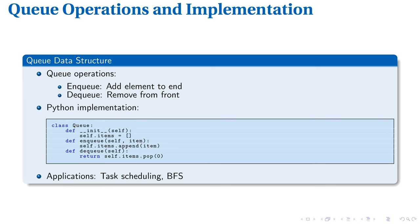Moving on to queues, let's examine their core operations: enqueue and dequeue. Enqueue adds an element to the end, while dequeue removes from the front. This first-in, first-out (FIFO) principle contrasts with the last-in, first-out (LIFO) behavior of stacks. The Python implementation shown demonstrates a simple queue class. The init method initializes an empty list, enqueue appends items to this list, and dequeue removes and returns the first item.